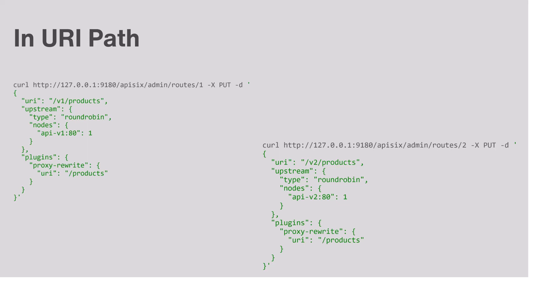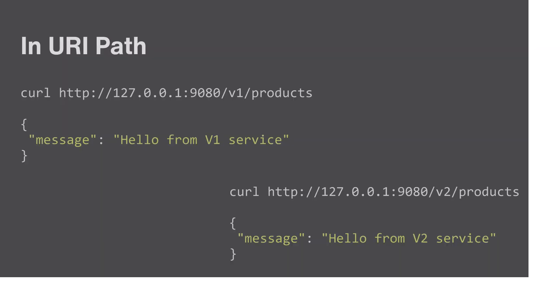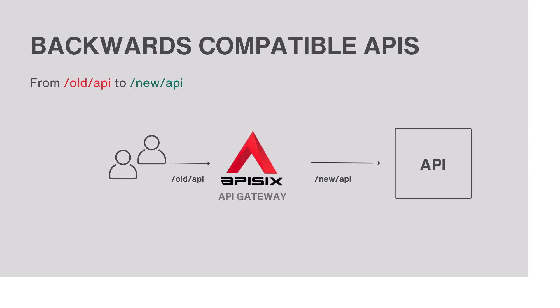APISIX can be configured to route requests to the appropriate API version. The example below shows how you can route traffic to different versions based on the path specified in the URI. The configuration will route requests to '/v1/products' to the v1 version service, and requests to '/v2/products' will be forwarded to the v2 service. When you send these requests to the different paths, you will get a different response from the two different service versions.